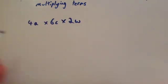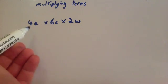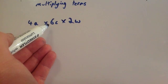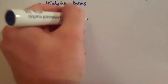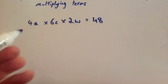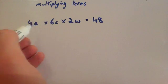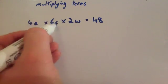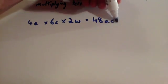So if it was 4a times 6c times 2w, again you'd multiply the numbers together first: 4 times 6 is 24, times 2 is 48. Then you've got a times c times w — put them in alphabetical order. They are already in alphabetical order: a, c, w. So the answer would be 48acw.